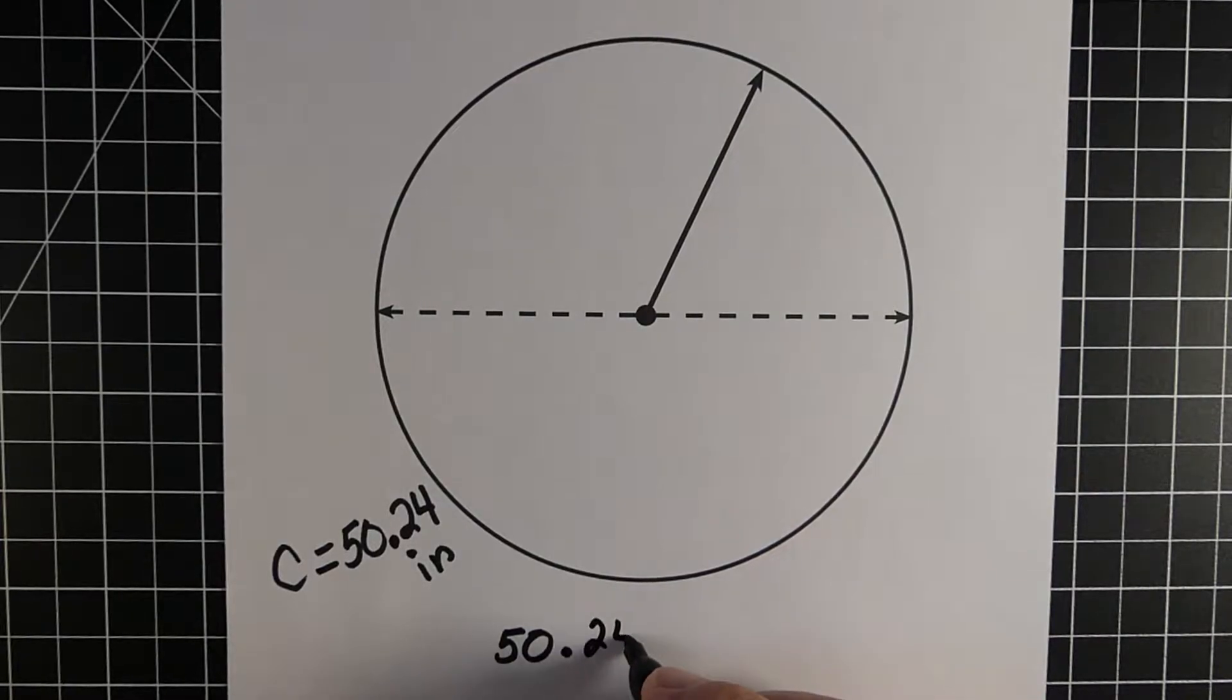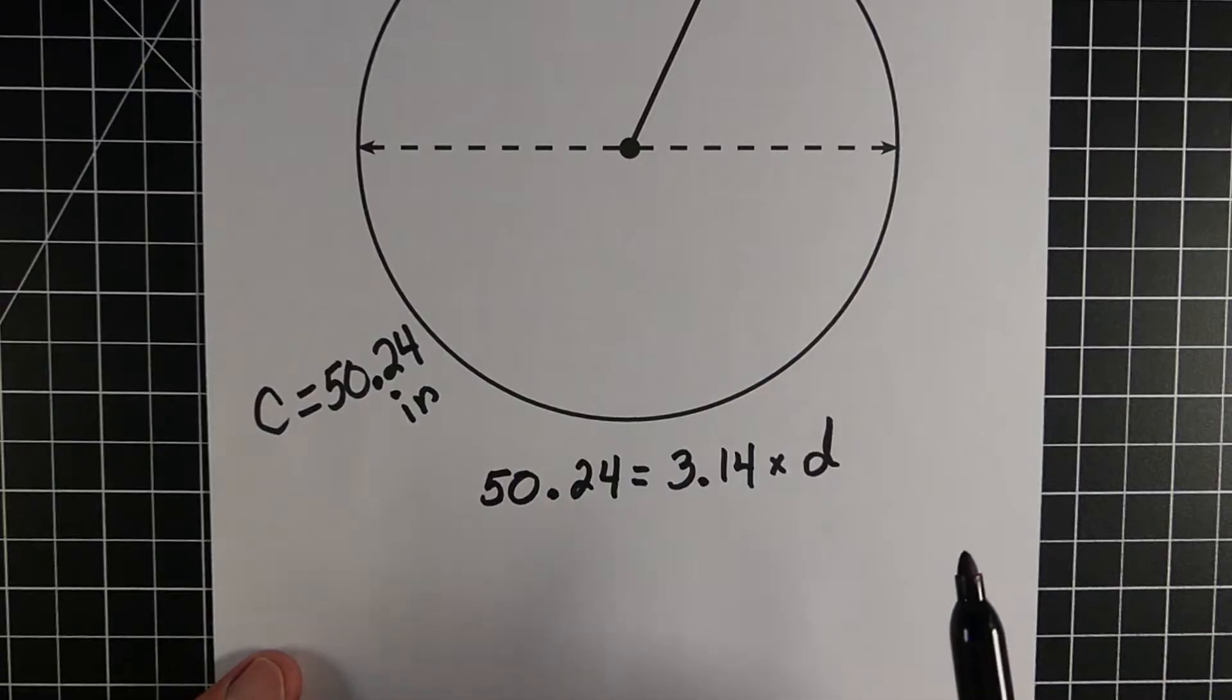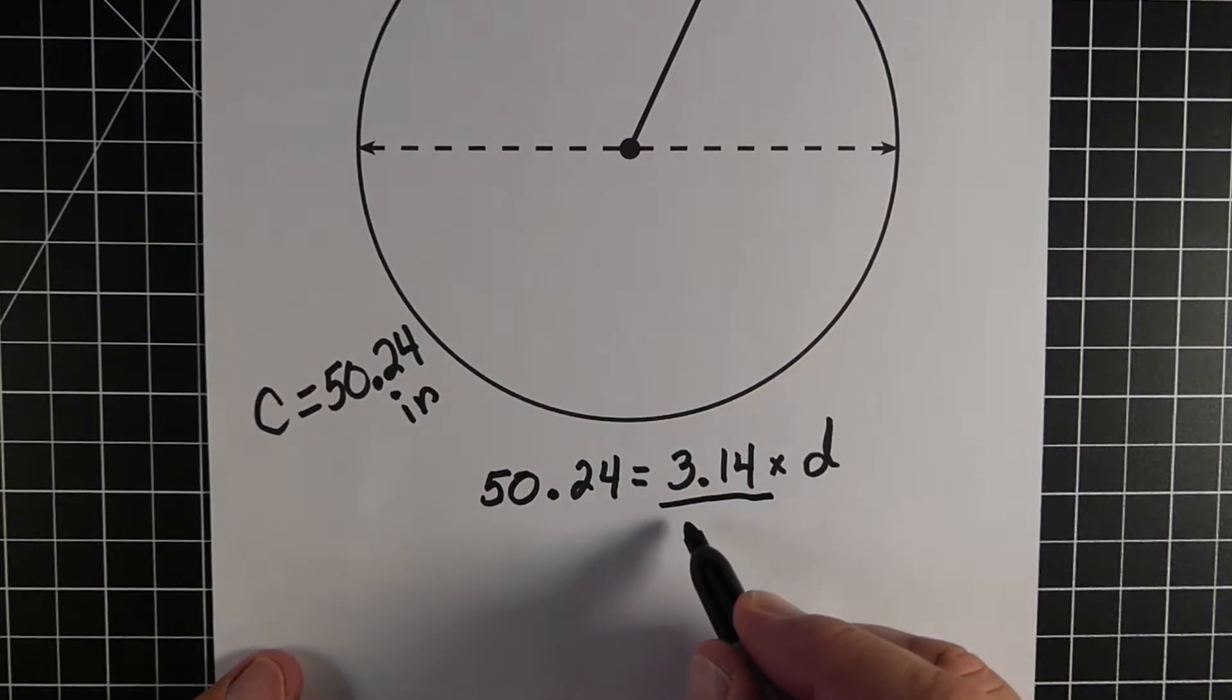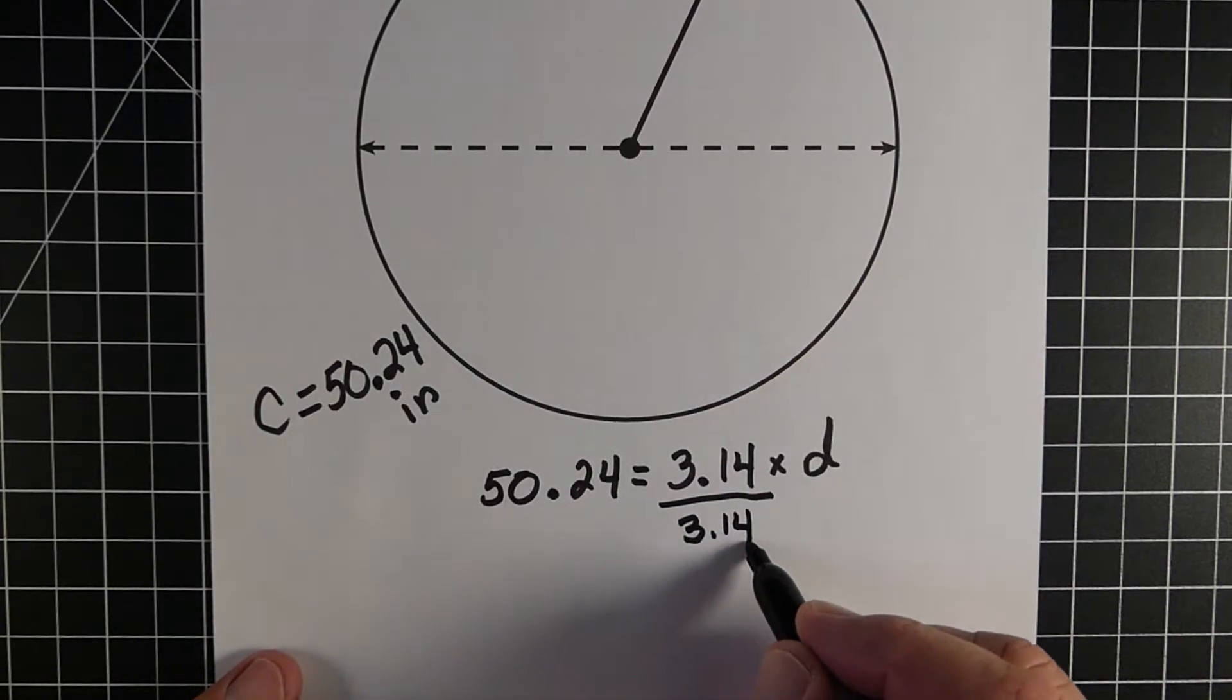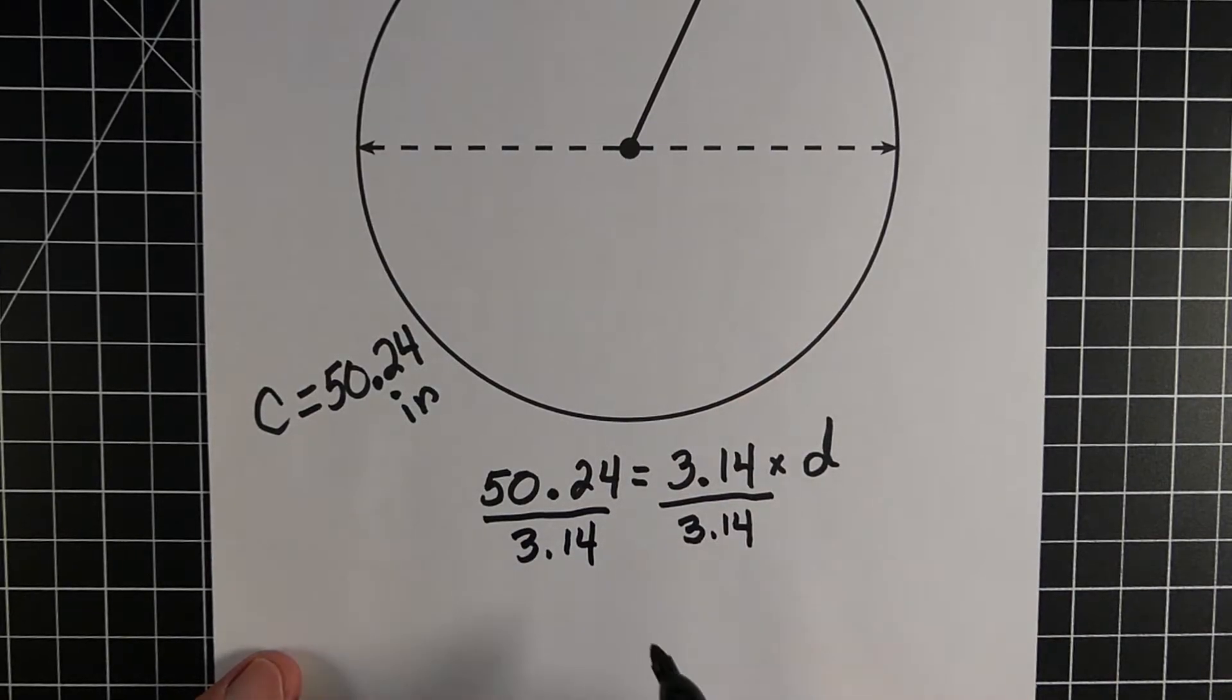Now, we know our formula was to take the 50.24, that's the circumference, and it would equal pi, which is our 3.14. And we would multiply that by whatever our diameter is, but that's what we don't know. So we're going to try to find the diameter and the radius. So what we have here is basically a one-step equation. We would divide both sides by 3.14, or pi, and that's going to give us what the diameter would be.